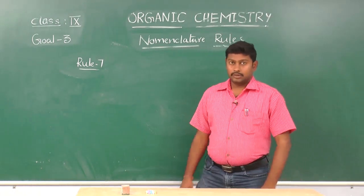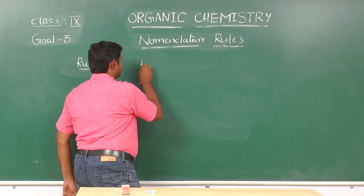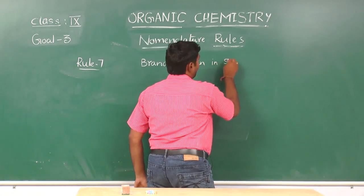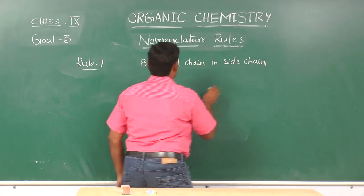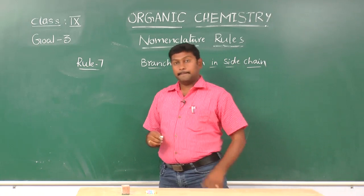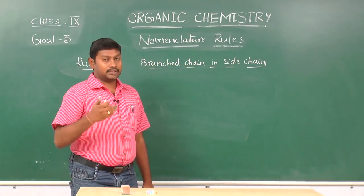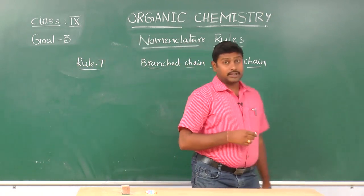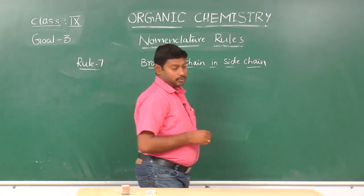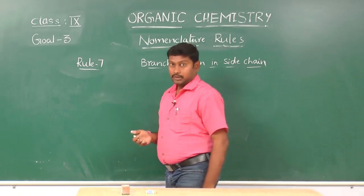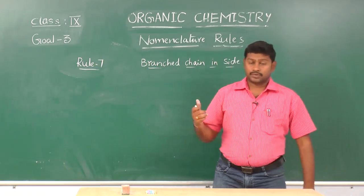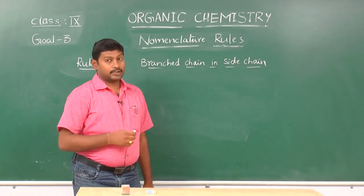Next rule — Rule 7: branched chain in side chain. If any substituent present on the main chain has itself branched again, then it is named as a substituted alkyl group. We should give the numbering to its carbon chain, starting from the carbon atom that is attached to the main chain. This complex substituted alkyl group is written in brackets.